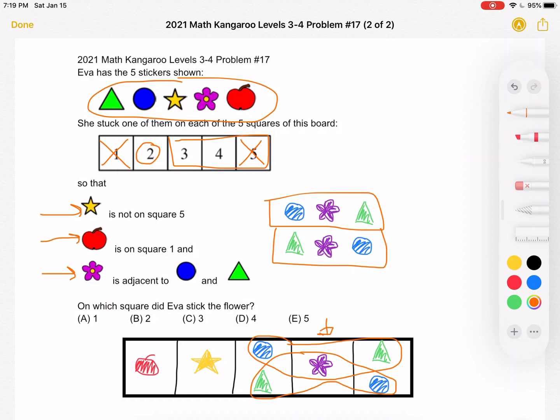And it is asking on which square did Eva stick the flower. Regardless of where we put the circle and the triangle, again, we have two options. In both cases, we know that the flower must be put on position four. That is answer choice D.